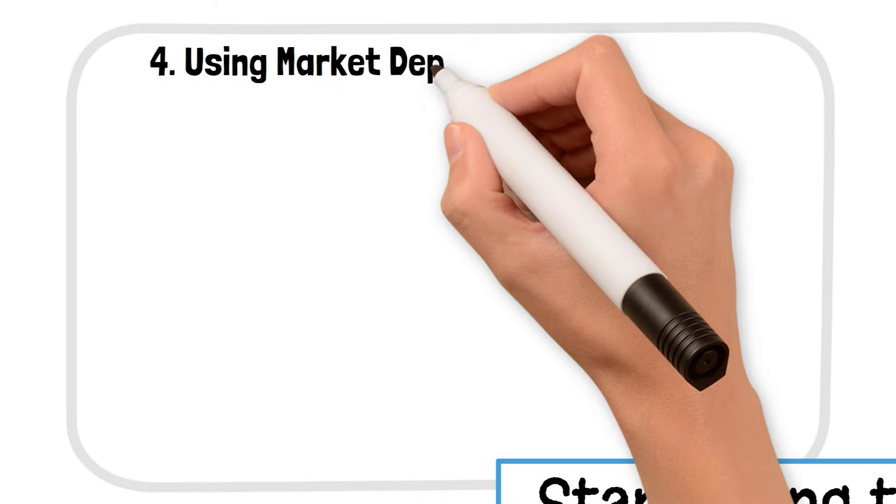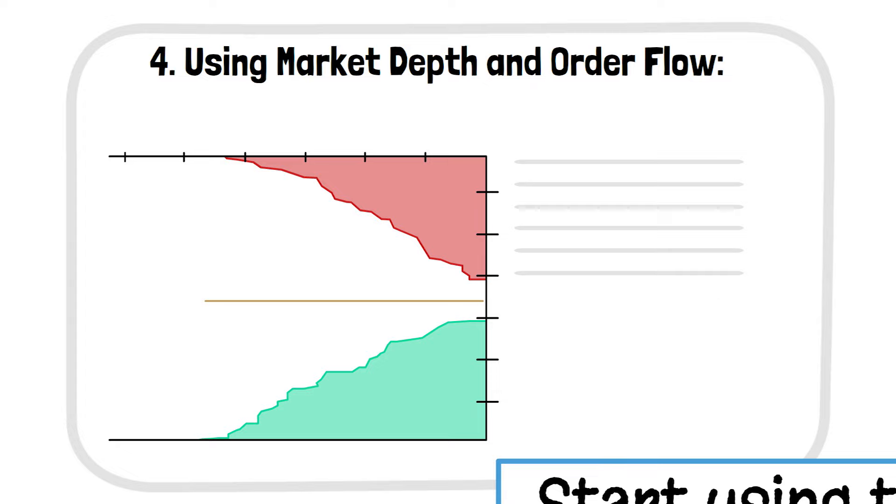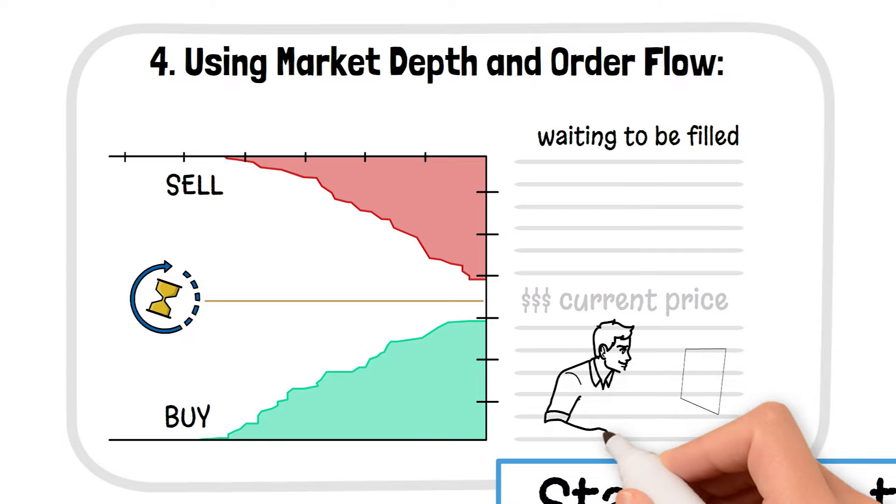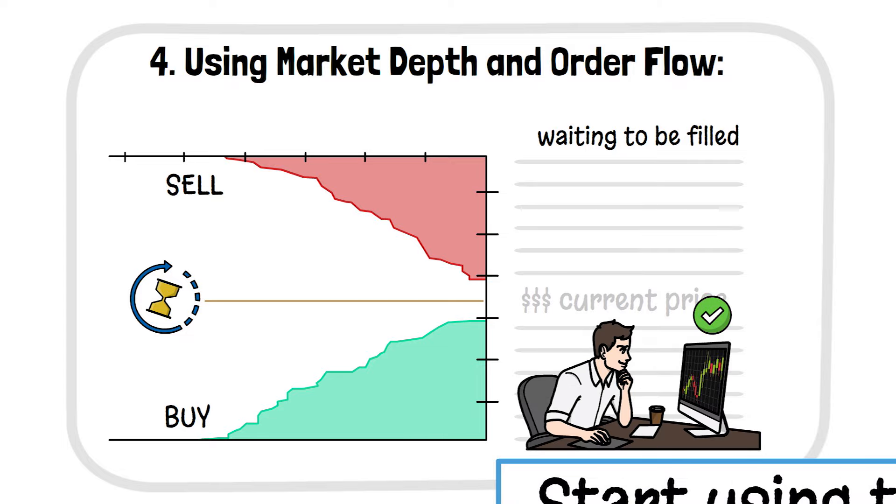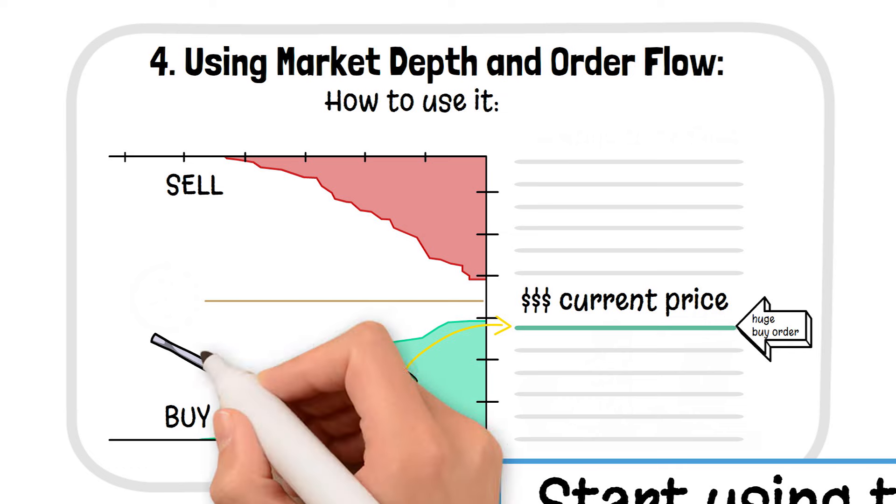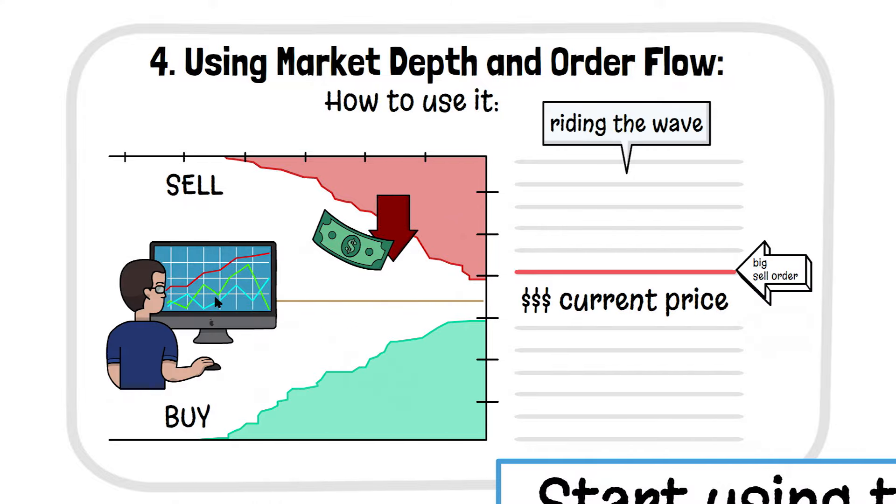Fourth, using Market Depth and Order Flow. This one's for when you're ready to get a little more advanced. Market Depth shows you the buy and sell orders waiting to be filled, and this helps you predict what might happen next in the market. It's a sneak peek into what big players are doing. Let's say you see a huge buy order sitting just below the current price. Chances are the price will bounce up when that order gets filled. Similarly, big sell orders above the price can cause it to drop. You're basically riding the wave of big traders moving the market.